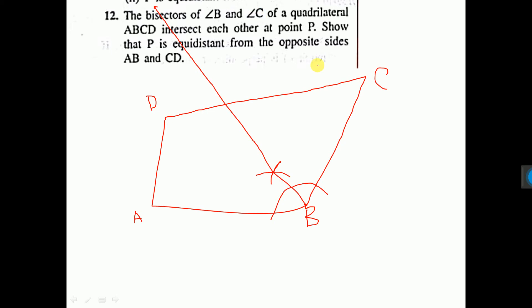C. Now C we have to bisect angle C. To bisect angle C put your compass at this point and draw one arc. From this point draw another arc. From this point draw another arc. Join this C and this intersecting point and produce.